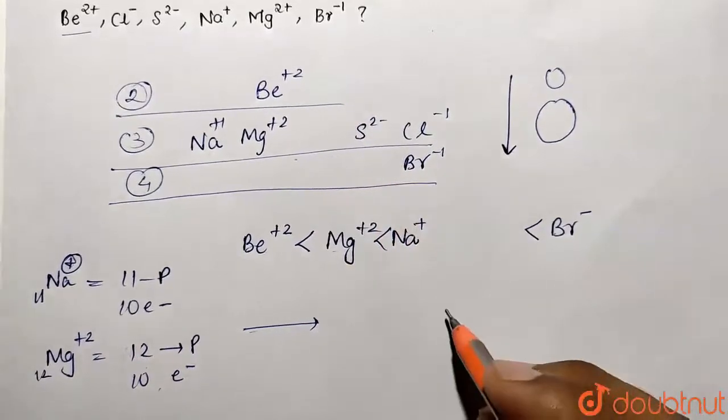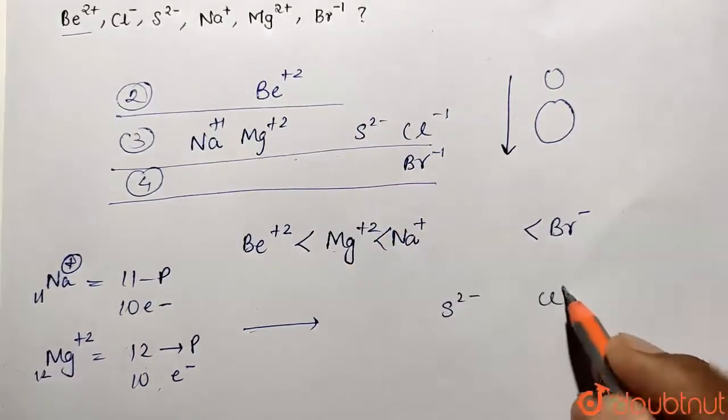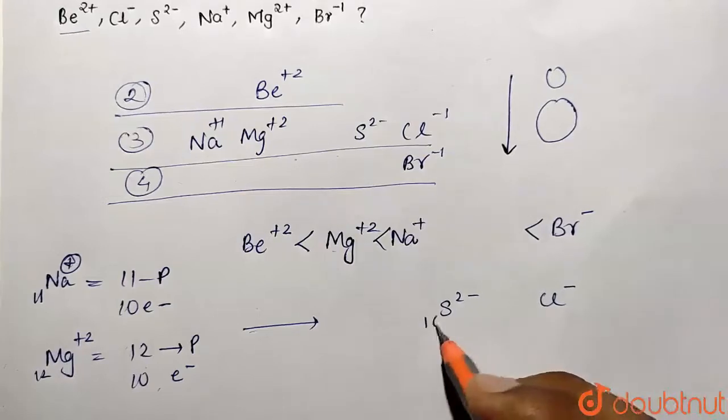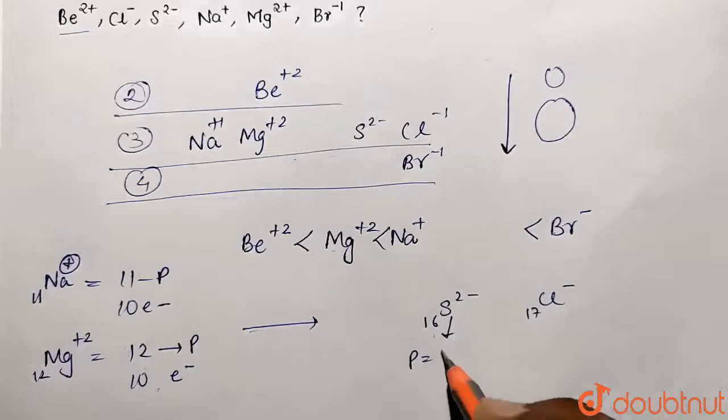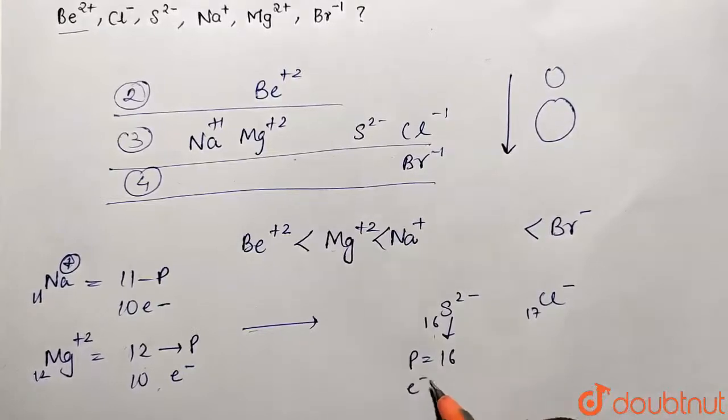Now come to the point - sulfide and chloride. So S²⁻ and Cl⁻. Atomic number of sulfur is 16, chlorine is 17. Now consider the number of protons. So protons here is going to be 16, but electrons number is going to be 18.